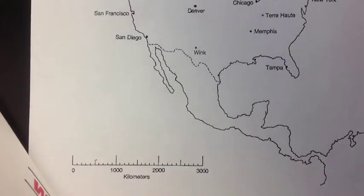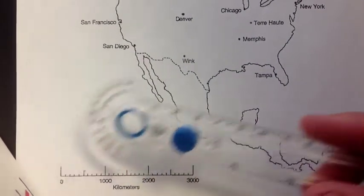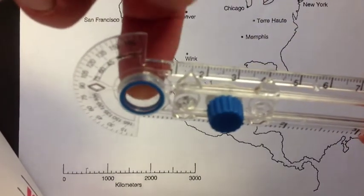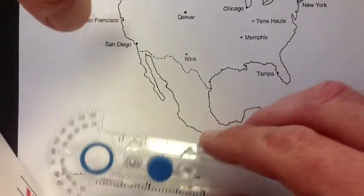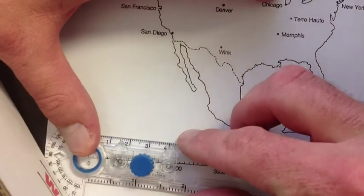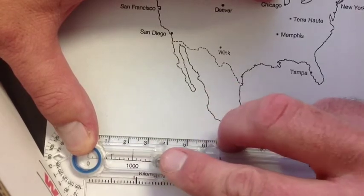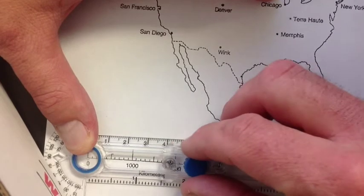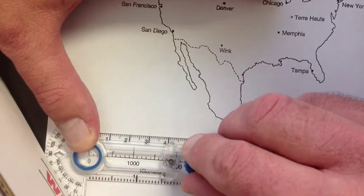Now I want to show you how to use the safety compass and the map in the lab. The first thing to remember is that the center of the safety compass — where my left index finger is — goes on zero. Put that right on zero and hold it down. Then you move the arm out. In the last example, one of the P and S-wave results was 1,800 kilometers.